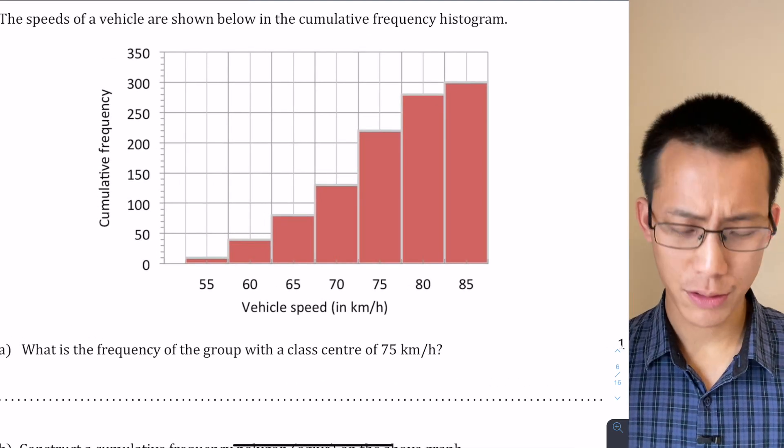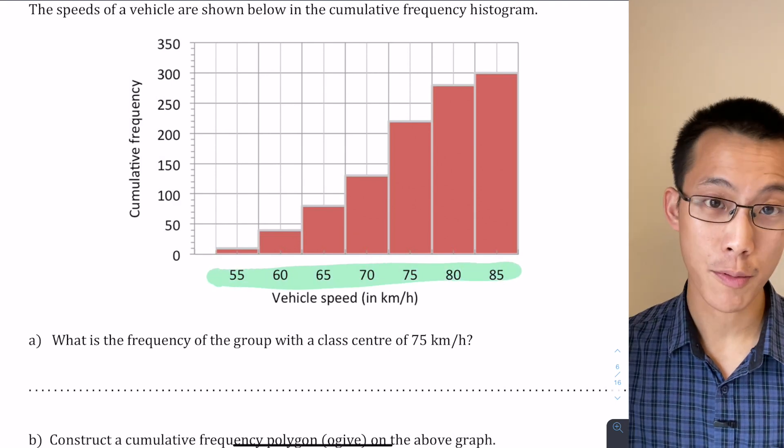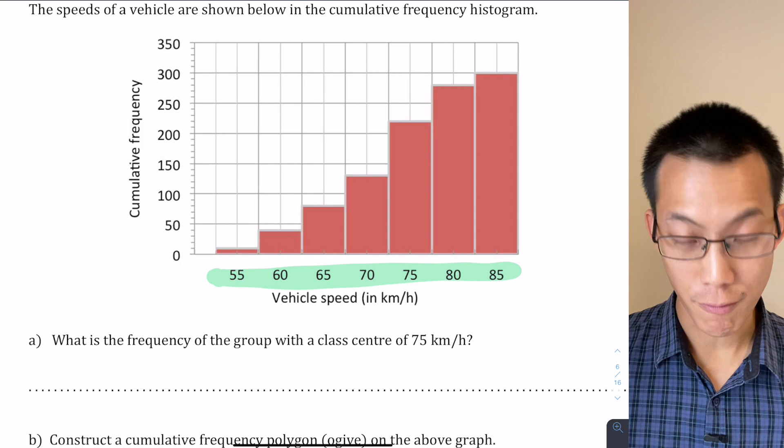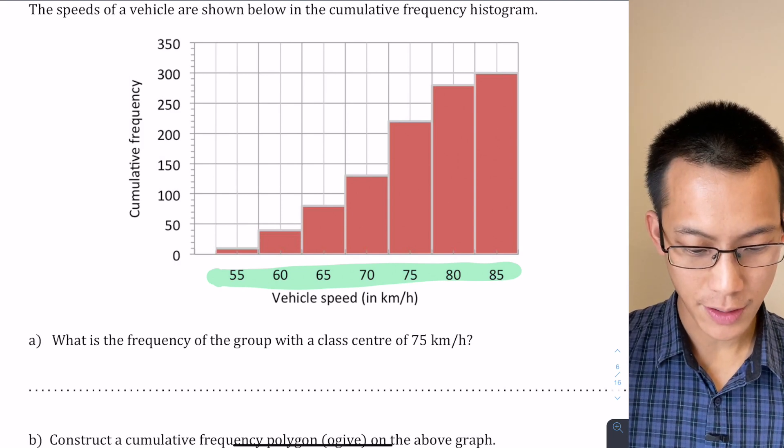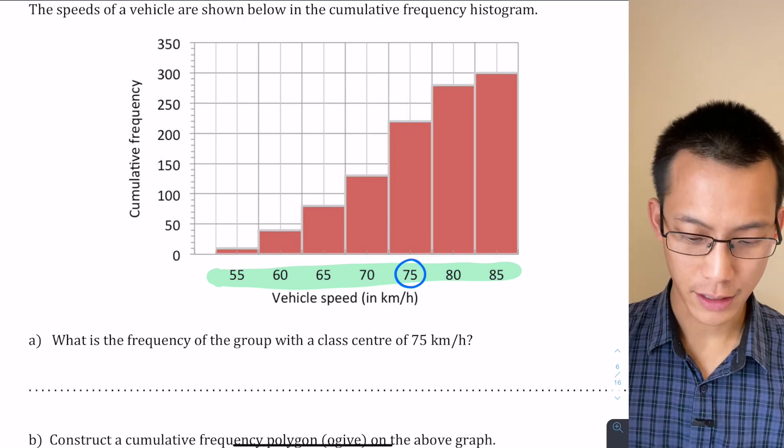Across the horizontal axis, so that's this axis here, we have the vehicle speed in kilometers per hour and the one that we're interested in right now is that one that says 75, this guy here. So we want to know what's the frequency of this particular group.